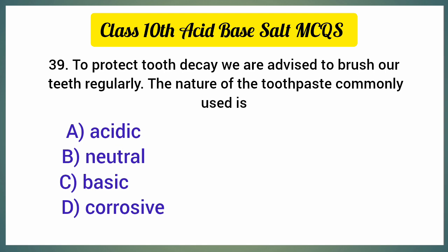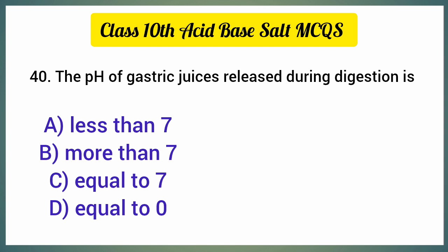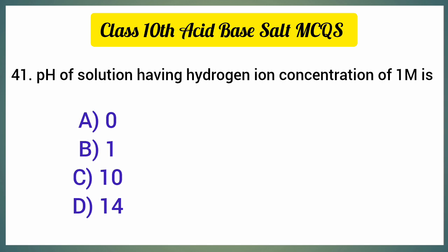To protect tooth decay we are advised to brush our teeth regularly; the nature of the toothpaste commonly used is — the correct option is option C, basic. The pH of gastric juices released during digestion is — the correct option is option A, less than seven.